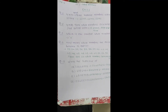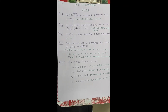Good morning students. Today we will discuss standard 6, chapter number 2, whole number, exercise 2.1. Question number 1 states: write the next 3 natural numbers after 10,999.